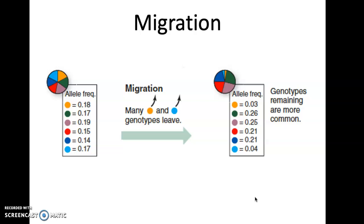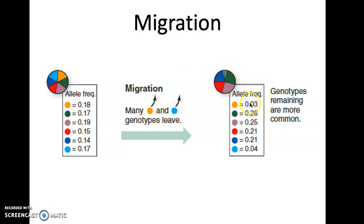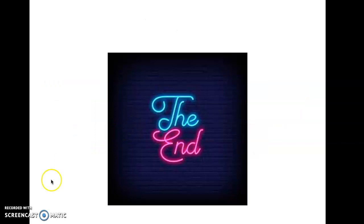In the pie chart for migration, we start with an evenly distributed frequency. If yellow alleles migrate away and blue alleles migrate away, the frequency of those left behind increases, while the frequencies of those that migrated drop considerably — here shown as 0.03 and 0.04. That's the third way genetic drift can happen. We'll stop there, thanks.